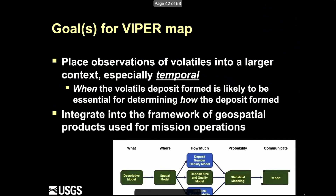A key thing to keep in mind is that the VIPER mission is there to understand the volatiles, and the goal of this map is to put the volatile observations into a temporal context. The hypothesis is that when the volatiles were deposited is likely to tell us a lot about how the deposits formed — whether these were ancient ice deposits being reworked, whether volcanism played a role, or whether the hydrogen we see is strongly influenced by solar wind protons. Very different ideas have different implications for how volatiles are distributed in time.